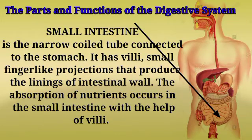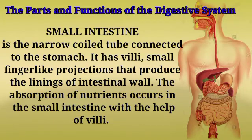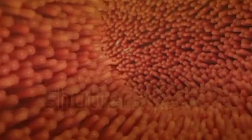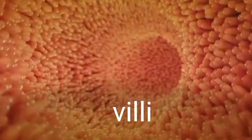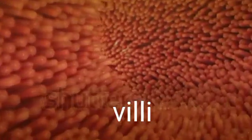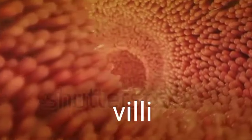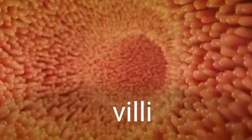The small intestine is the narrow coiled tube connected to the stomach. It has villi — small finger-like projections that line the intestinal wall. The absorption of nutrients occurs in the small intestine with the help of villi. The villi increase the internal surface area of the intestinal wall to increase the absorptive area.